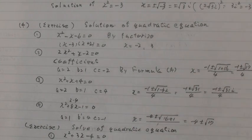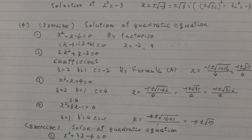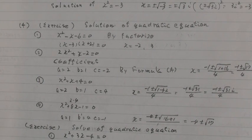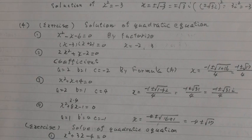And circle 2: 2x squared plus x minus 2 equals 0. Coefficient a equals 2, b equals 1, c equals minus 2. By formula A.